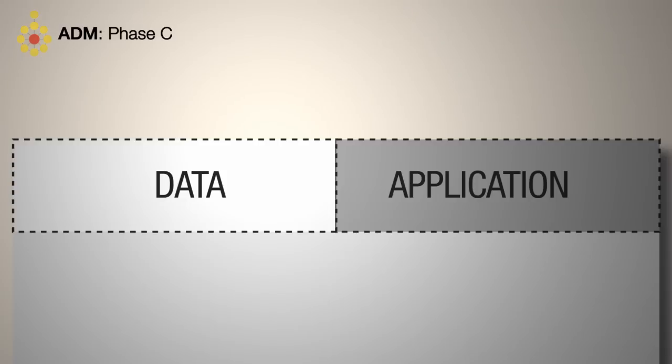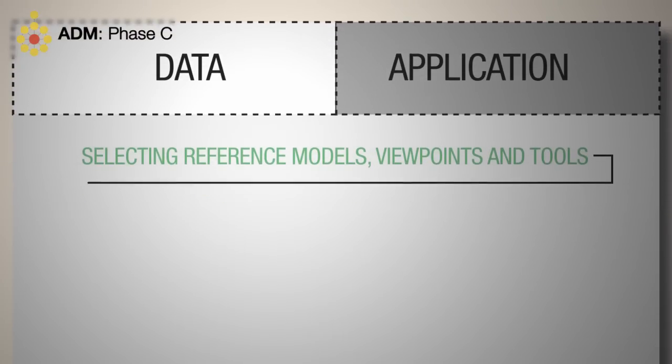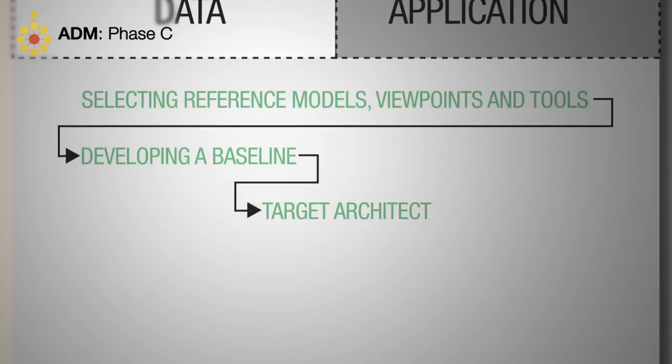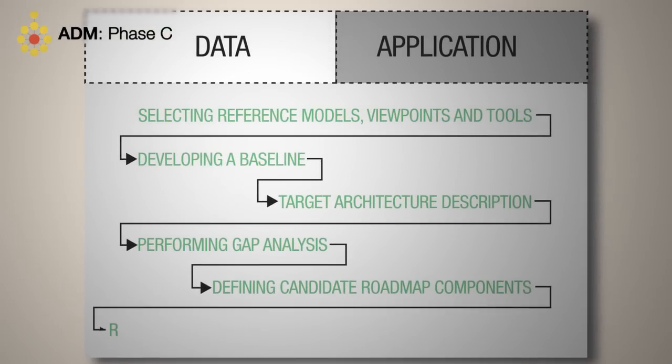The steps for data and application are very similar: selecting reference models, viewpoints and tools, developing a baseline and then target architecture description, performing gap analysis and defining candidate roadmap components, and resolving any impacts across the architecture landscape.